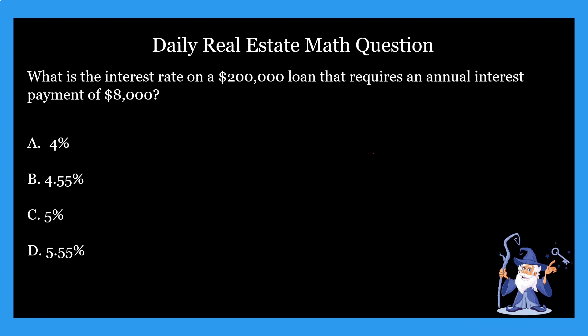Anyways, without further ado, let's jump right into it. So this week we're talking about interest rate problems and we're going to continue that trend today. The question says: what is the interest rate on a $200,000 loan that requires an annual interest payment of $8,000? It gives us four options. I'm going to give you guys some time to work out the problem — pause if you need to.